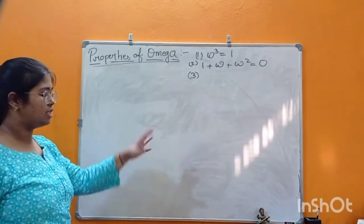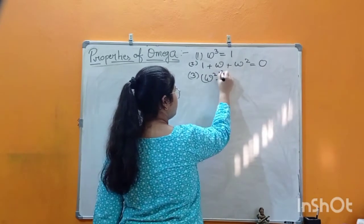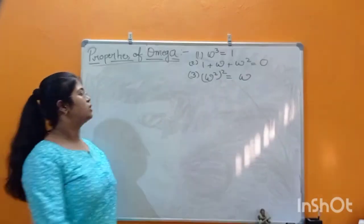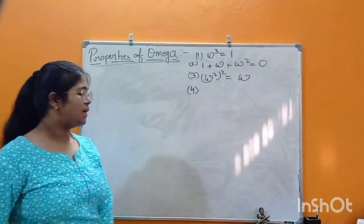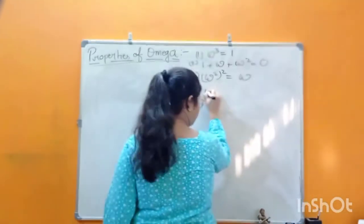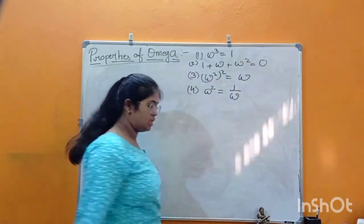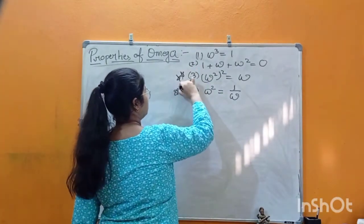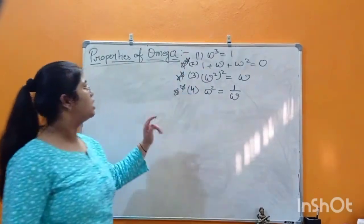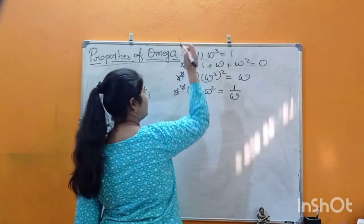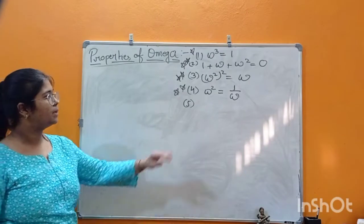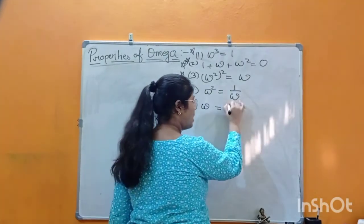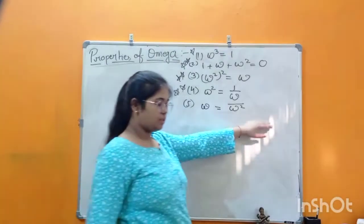The third property is: (ω²)² = ω. The fourth property is: ω² = 1/ω — omega squared equals the reciprocal of omega. Both of these properties are very important. The fifth property is: ω = ω̄² — omega equals the complex conjugate of omega squared.